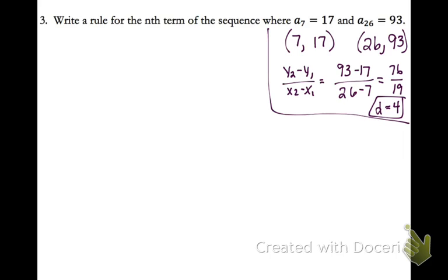So now if you think back to the last problem we just did, we found our rule with just the common difference and one term. So now I have two terms and the common difference. So I'm just going to pick my favorite term, which is going to be the 7th term is 17. And I'm going to find my rule this way. I could have also used the 26th term as well.